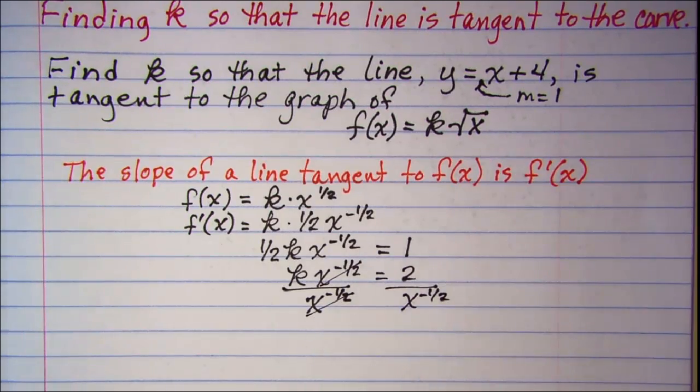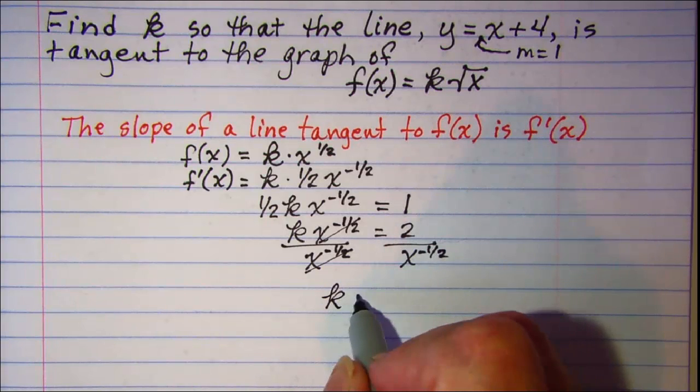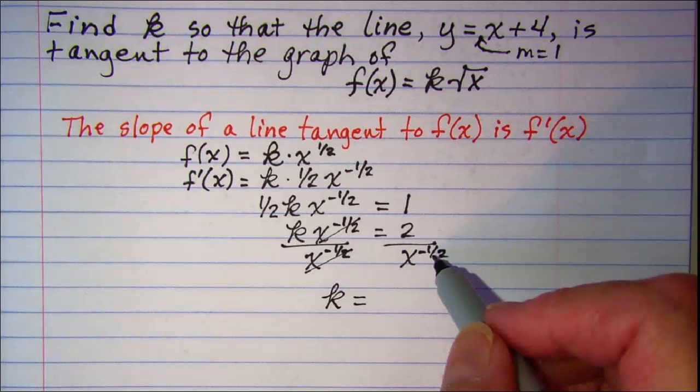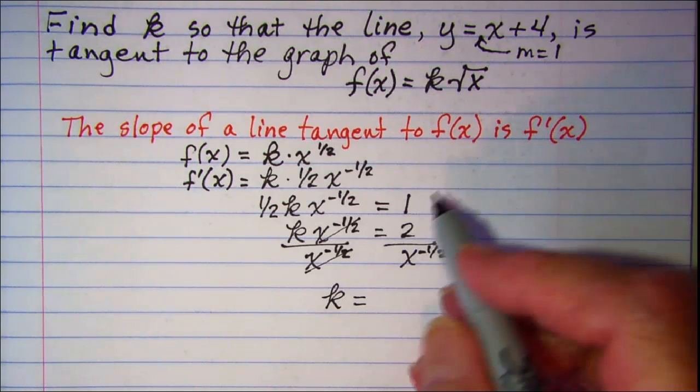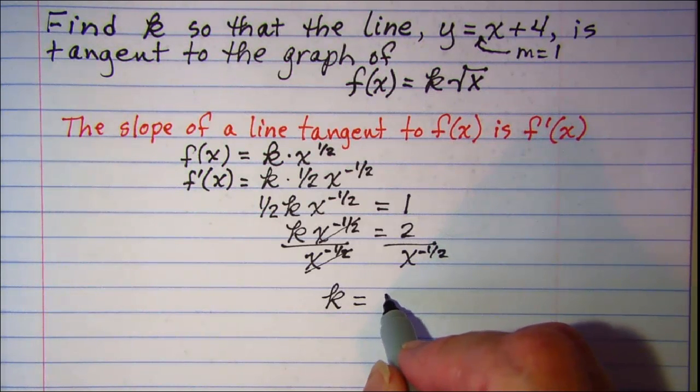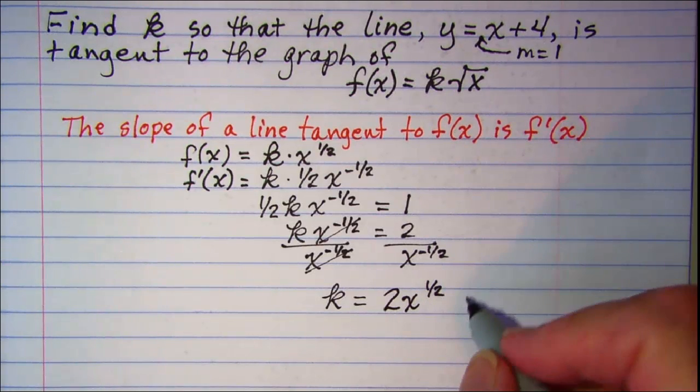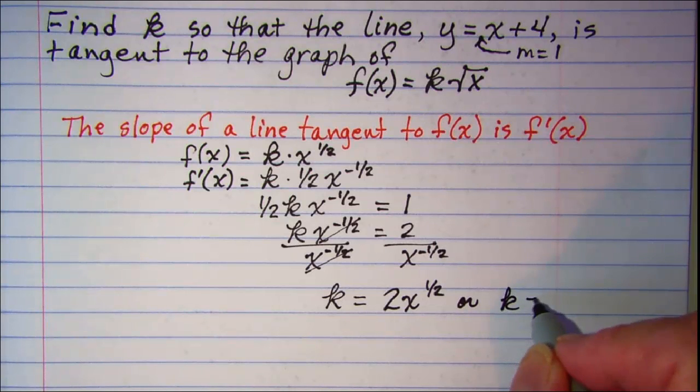These cancel and we have k is equal to... I can write this x to the negative one half, I can change that exponent to a positive exponent and move it up to the numerator. So k is two x to the positive one half, or we can write that as k equals two times the square root of x.